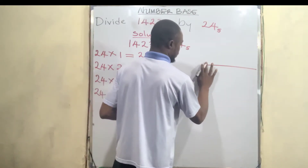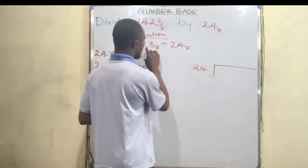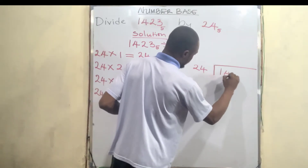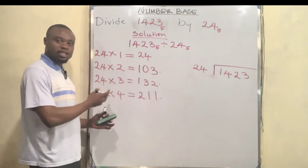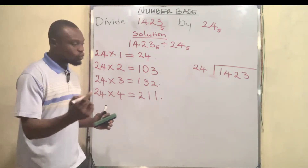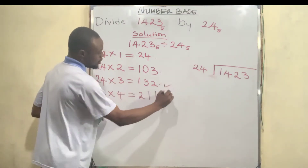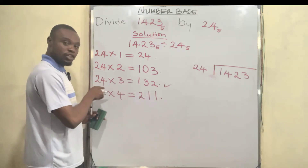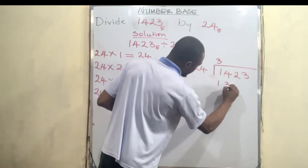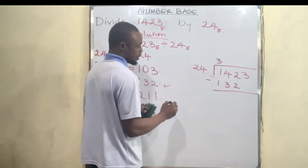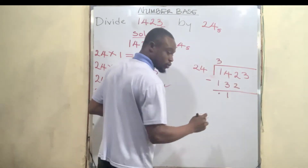Now let's do the long division. We draw a line, write our divisor 24 here and the dividend 1423. Looking at the multiplications we just did, the number close to 142 is 132, which is 24 multiplied by 3. So we write 3 up top. Three times 24 gives us 132. We draw the line and subtract: one minus one is zero, four minus three is one, two minus two is zero.